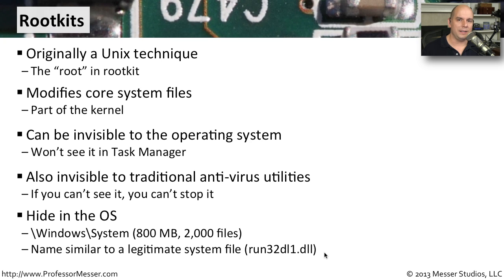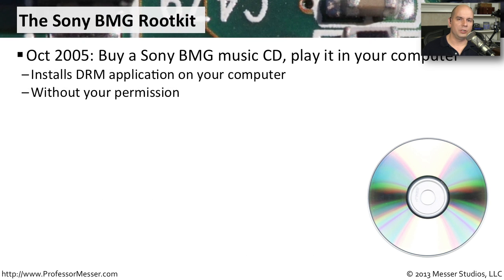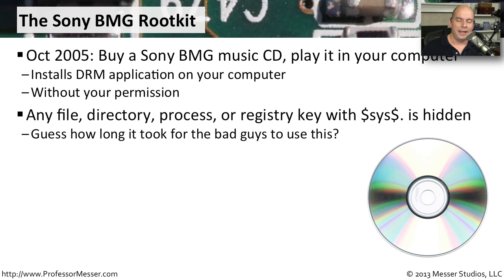Rootkits use a lot of different ways to hide themselves, so make sure you keep your operating system updated so rootkits can't find a way onto your system in the first place. One of the most notorious rootkits, still discussed today, came in 2005 from Sony BMG. You put a music CD into your computer and, behind the scenes without your permission or any messages, it installed a DRM application — a digital rights management application — that was a rootkit. It could hide any file, directory, process, or registry key by simply using the prefix $SYS$.